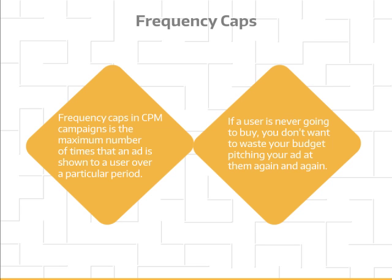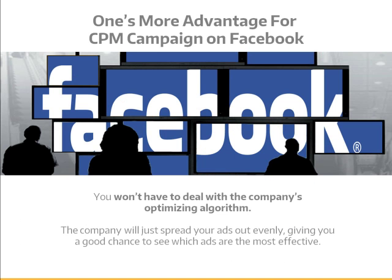Start with three times a day. One advantage of running a CPM campaign on Facebook is that you won't have to deal with the company's optimizing algorithm. The company will just spread your ads out evenly, giving you a good chance to see which ads are the most effective.